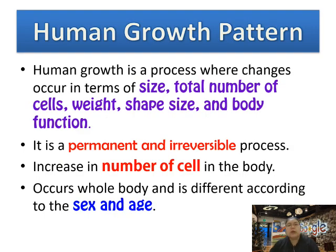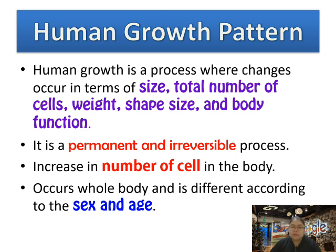Now let's see the human growth pattern. It is a process involving changes in size, total number of cells in your body, weight, shape, and body function — from when you were a baby until now. This process is permanent and irreversible — irreversible means you cannot reject it, you cannot say you don't want to grow. It is a continuous process; you increase the number of cells in your body.